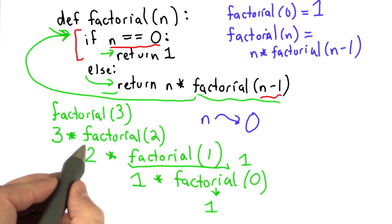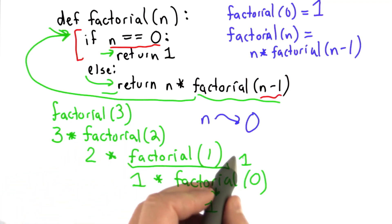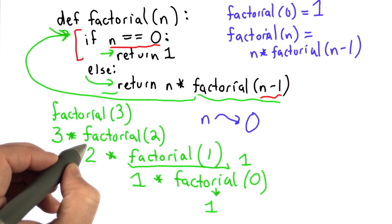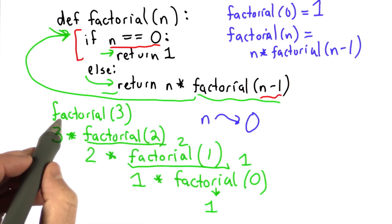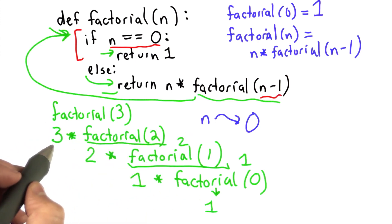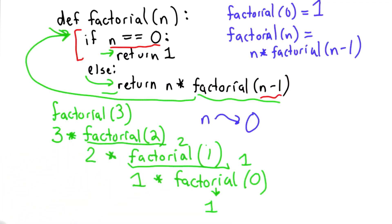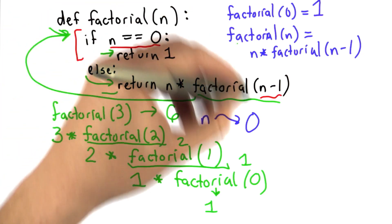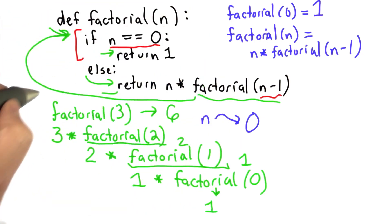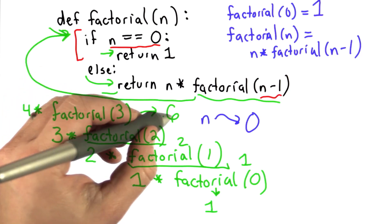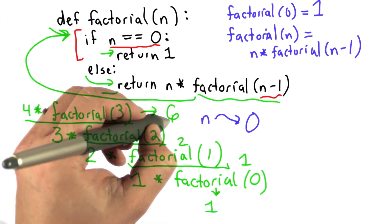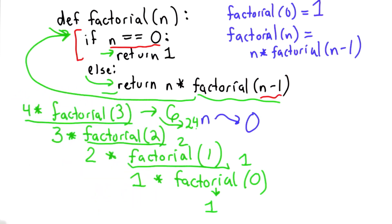Now to get the result back from factorial of 2, we had 2 times factorial of 1, which we now know is 1, so we get 2. And to get the result from factorial of 3, we have 3 times factorial of 2, which now has the value 2, giving us 6. Note the way we've defined it - if we tried factorial of 4 instead, the first time we go through we get 4 times factorial of 3. We had factorial of 3 as 6, so 4 times 6 gives us 24, which is the result of factorial of 4.